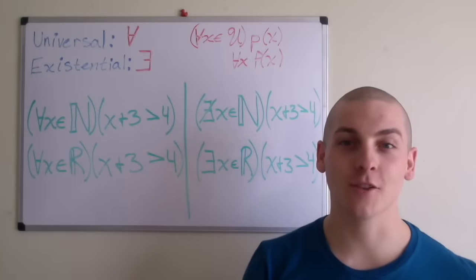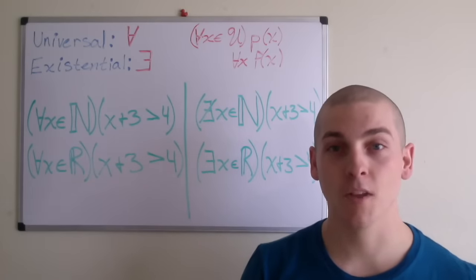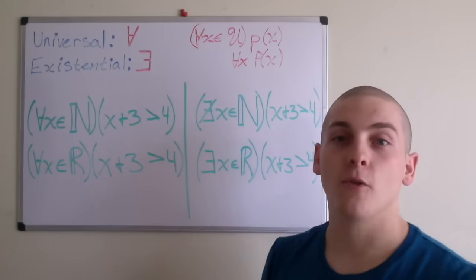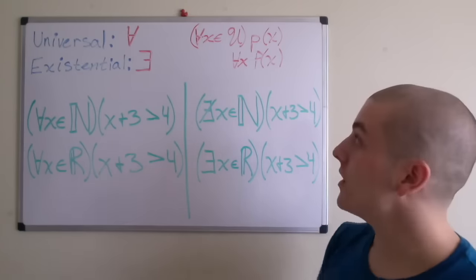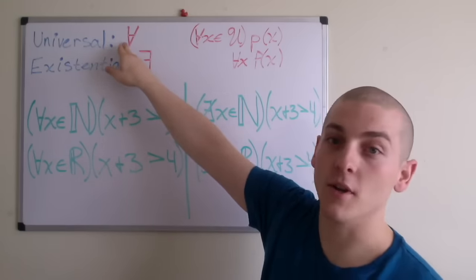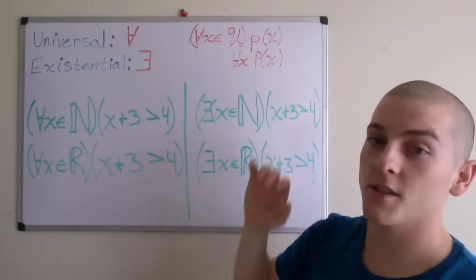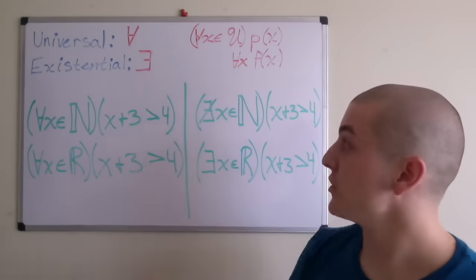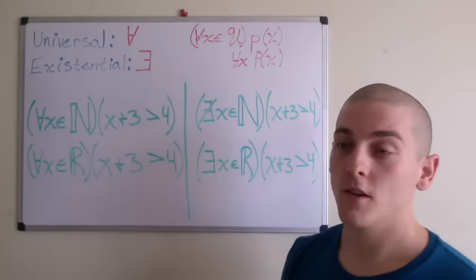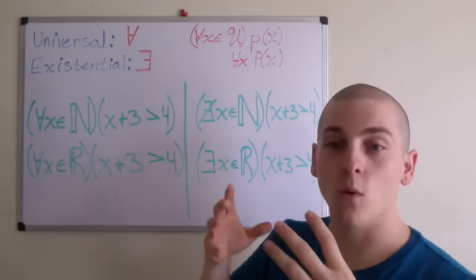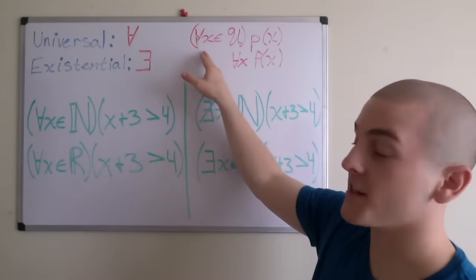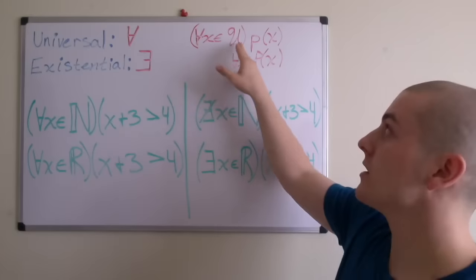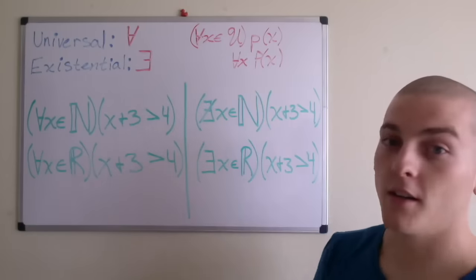In this video, I'll be introducing the universal and existential quantifiers. But first, I have to introduce the propositional function. The propositional function, denoted P(x), takes on a value of true or false for everything that you feed to it. With the universal quantifier — read as 'for every' — you would say: for every X that is an element of the universe, P(x) is either true or false. The existential quantifier says 'there exists' — there exists is just stating that there is at least one X that is an element of the universe such that P(x) is true or false.